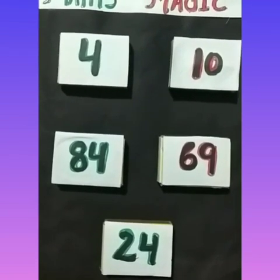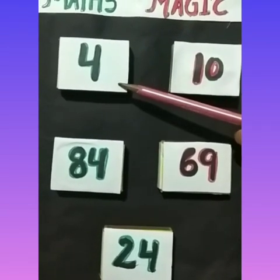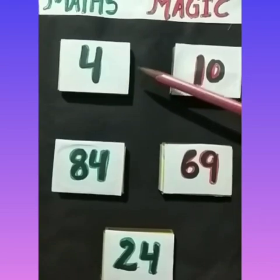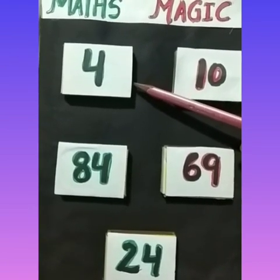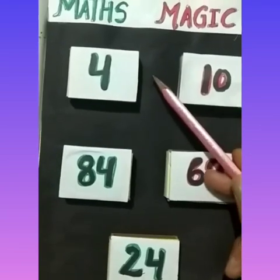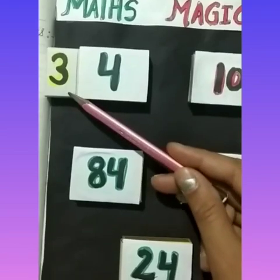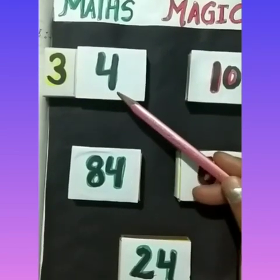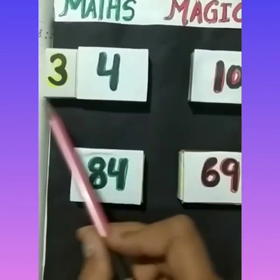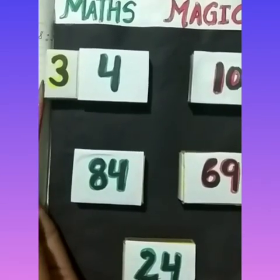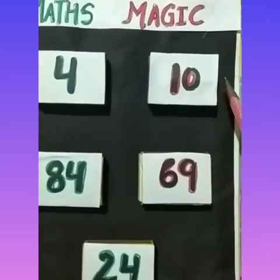Okay children, have you seen the magic? Let's do some maths magic! Which number is this? This is 4. Tell me, what comes before 4? Magic! Oh — this is 3! So children, what comes before 4? 3! And what comes before 10?